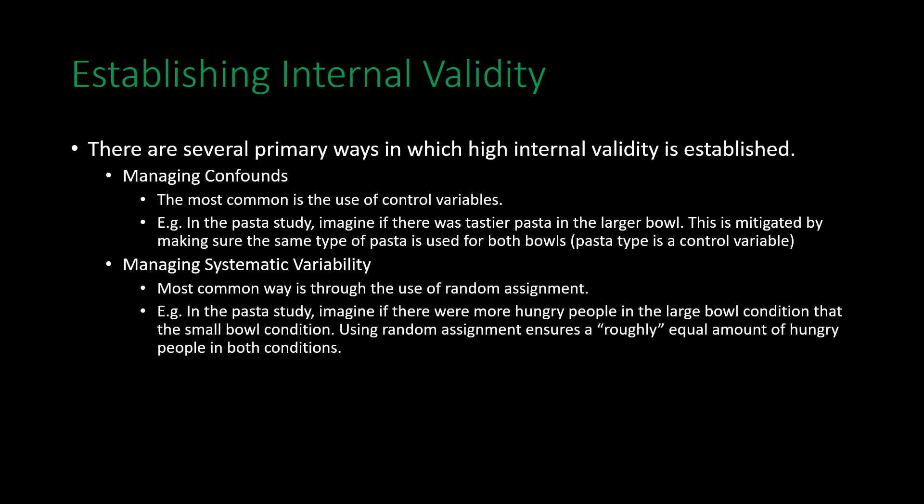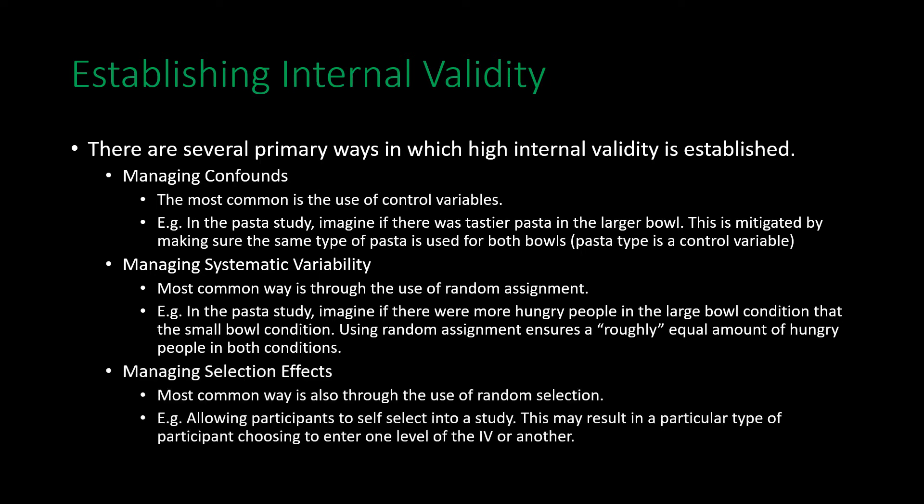Through randomly assigning participants to conditions, we can assume that even though there might be differences in other variables surrounding participants, on average those differences will wash out. Selection effects refer to different types of people self-selecting into groups of a study, or the researcher having some bias in how they assign participants to groups.